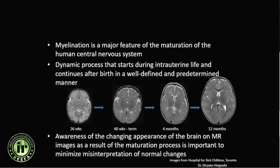Myelination progresses in a very orderly and predictable manner. It is a dynamic process that starts during intrauterine life and continues well after birth. Awareness of the changing patterns of brain MRI appearance as a result of this myelination is essential for providing an accurate assessment of normal myelination and identification of disease processes.